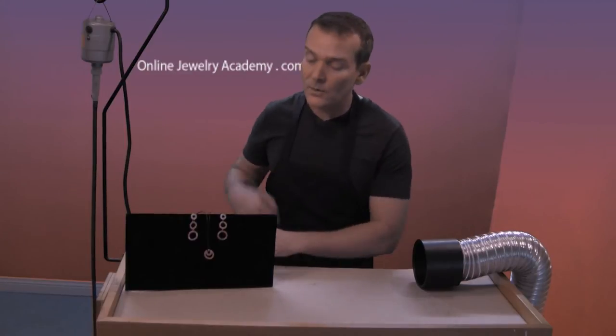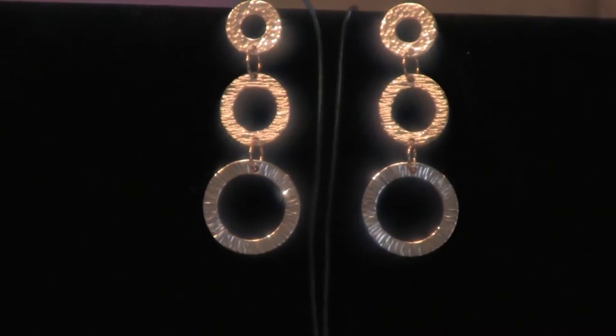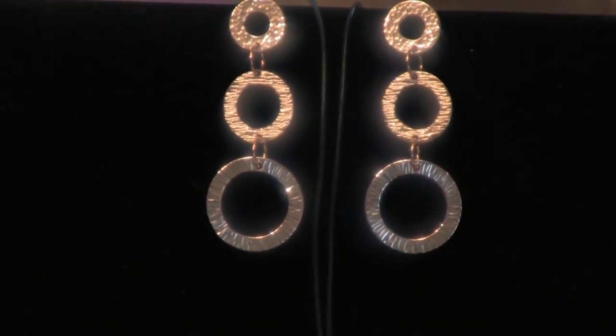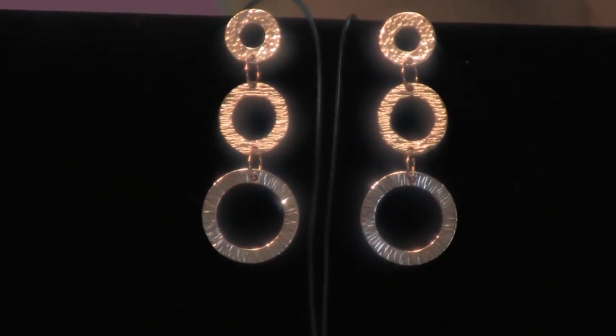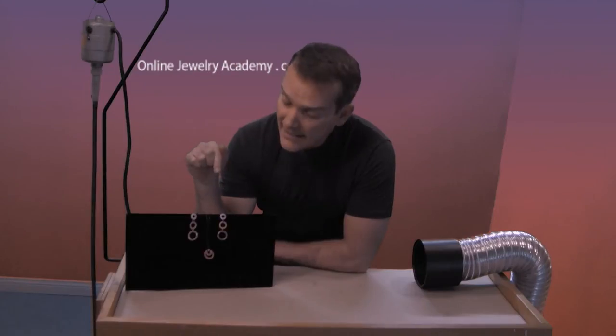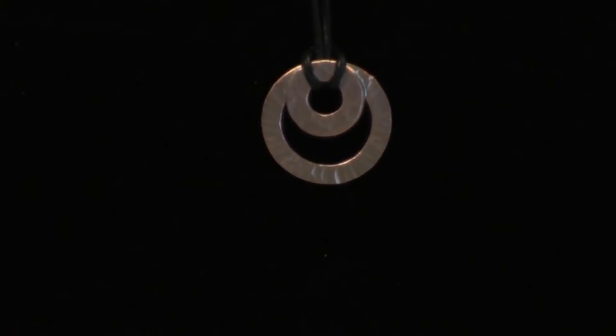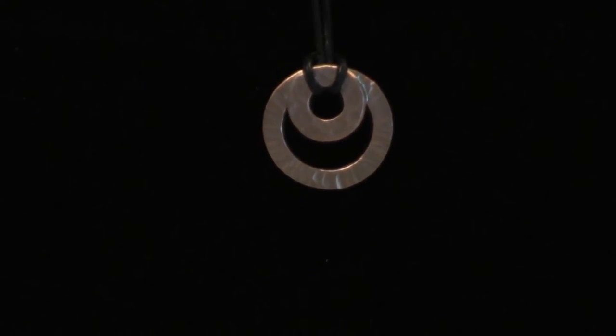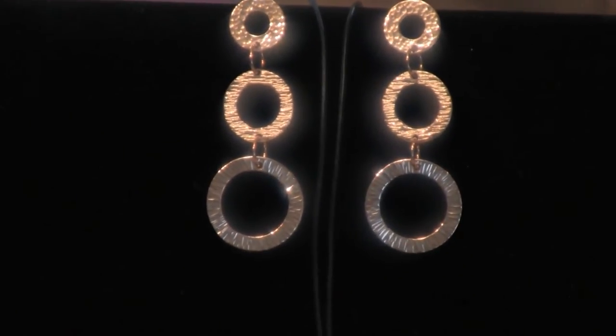Now, in another video called Hammer Texture Earrings, I showed you how to make these earrings using copper washers from the hardware store. You can see I applied three different textures to the earrings. I wanted to make something to go with these earrings, so I made a pendant. This pendant exhibits the same textures on the same size washers. I think it would be great for either a man or a woman.